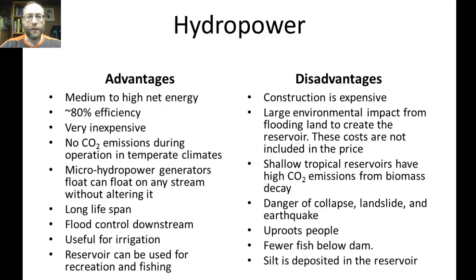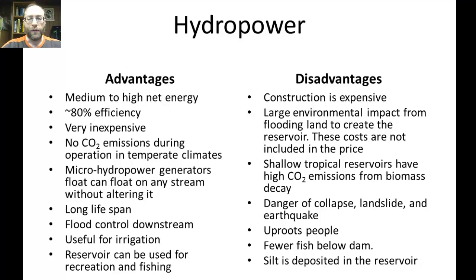Disadvantages: construction is very expensive — the Three Gorges Dam took years to build. There is a large environmental impact from flooding land to create the reservoir, and these costs are not included in the price. All ecosystems in the flooded area are completely destroyed and replaced with a lake ecosystem. People get uprooted — any towns, villages, or cities at the reservoir site must be relocated. When they built the Three Gorges Dam, they literally had to move cities. In tropical areas with shallow reservoirs, there is significant biomass decay producing high CO2 emissions.